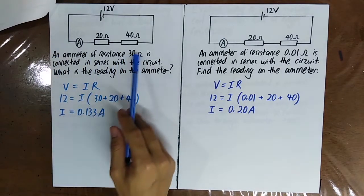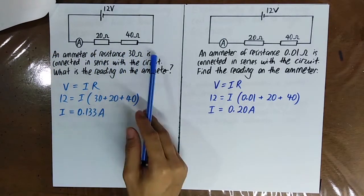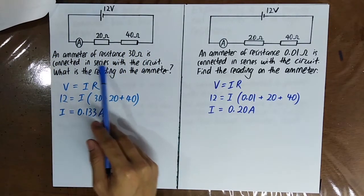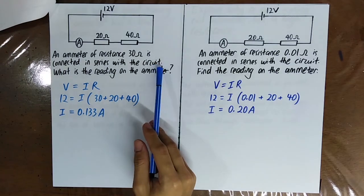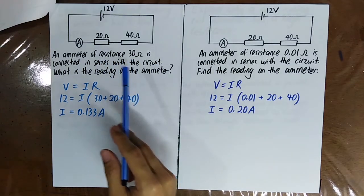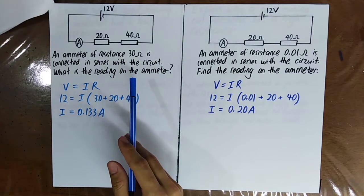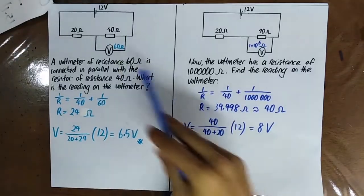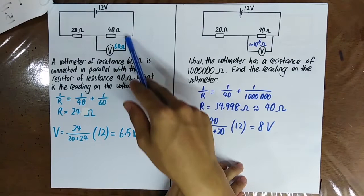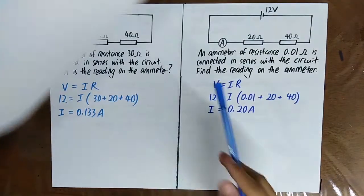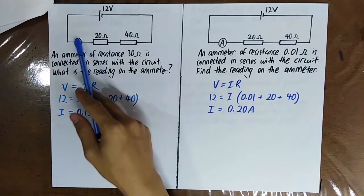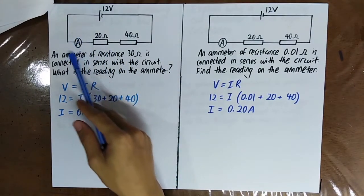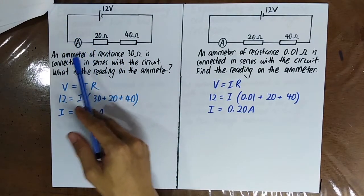An ammeter of resistance is connected in series with the circuit. You know that the voltmeter has to be connected in parallel, and now you know that an ammeter has to be connected in series.